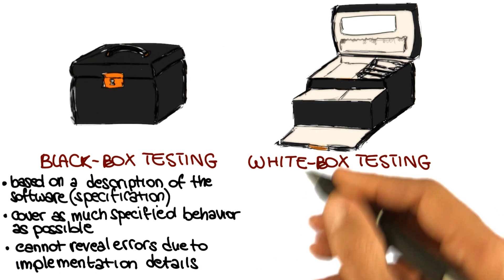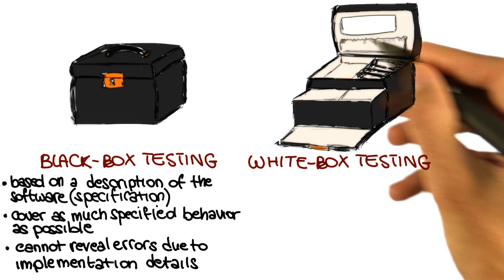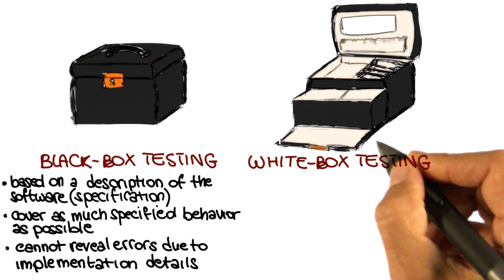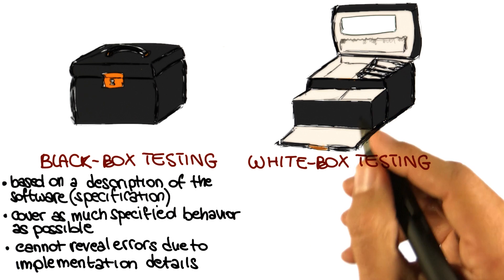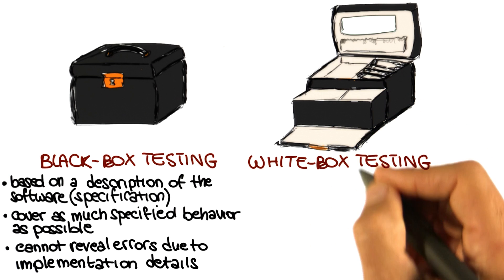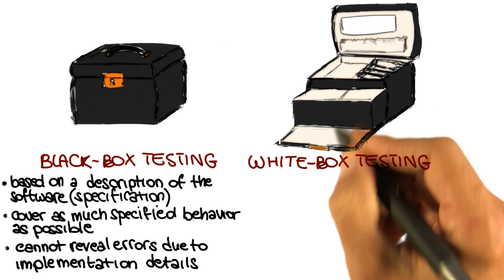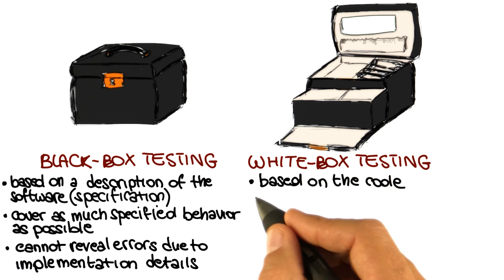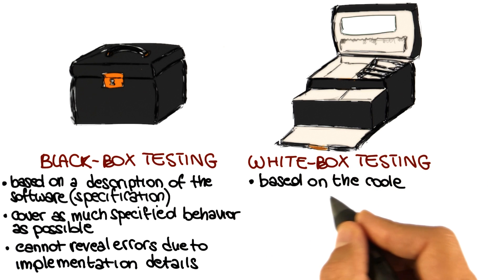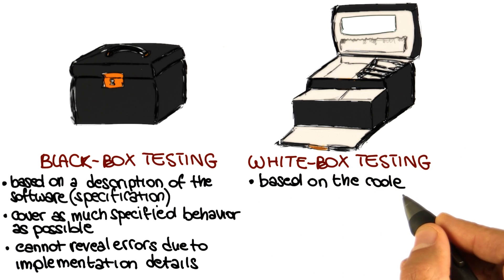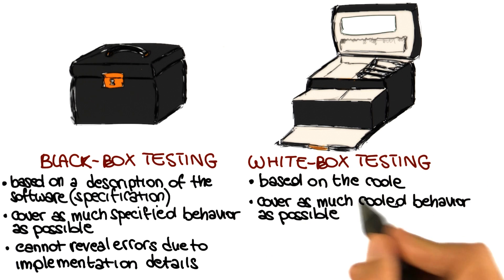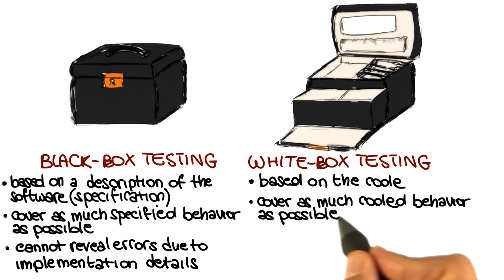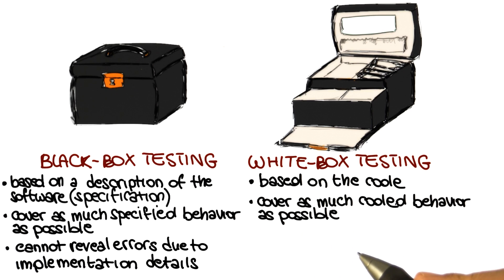Conversely, white box testing is the kind of testing that looks inside the box — so it looks at the code, how the code is written, and uses this information to perform the testing. White box testing is based on the code, and its goal is to cover as much coded behavior as possible.